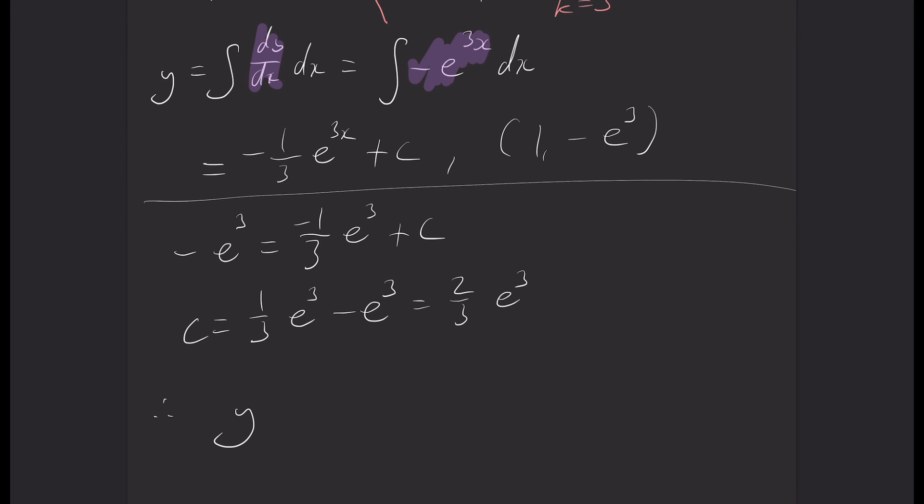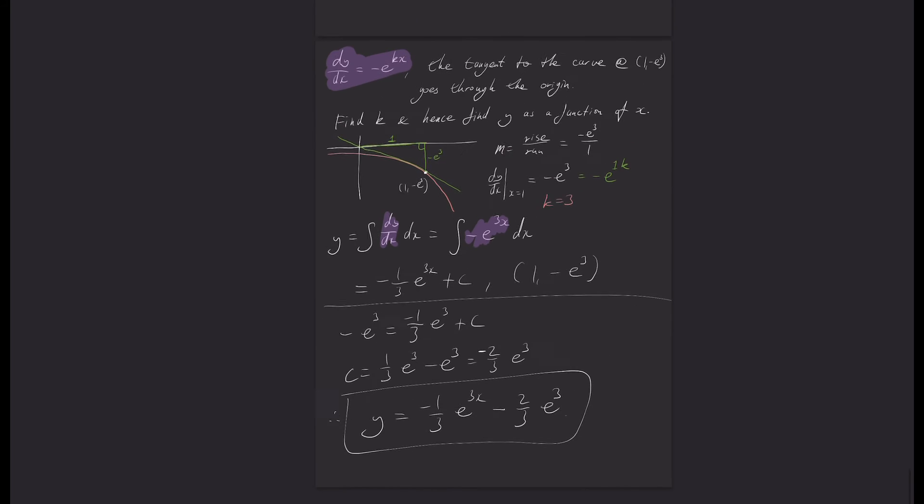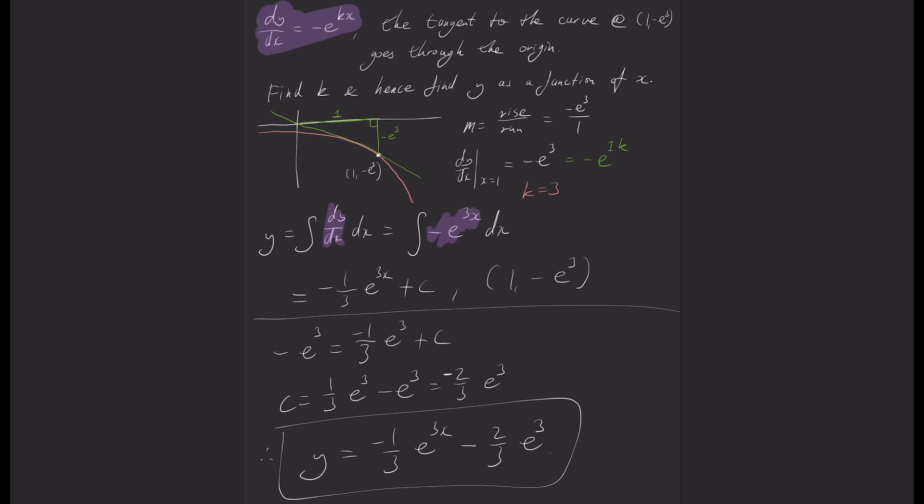Therefore, y is equal to negative 1/3 e to the 3x minus 2/3 e³. Okay. I hope that was useful. Good luck.